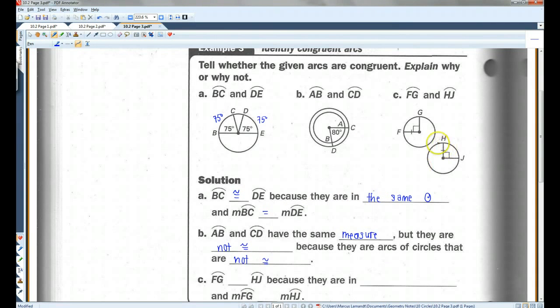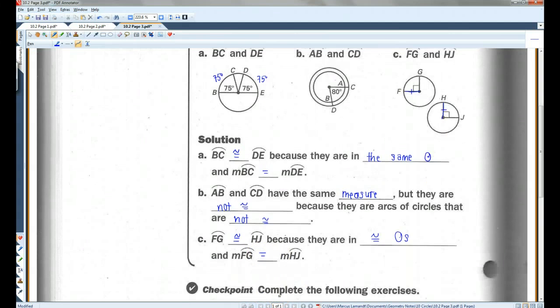Now, here, I want you guys to notice that this circle has a radius that is congruent to a radius in this circle. Hopefully, you guys remember, if you have two circles with the same radius, the circles are congruent. So, these arcs are congruent because they are in congruent circles. And, the measures of the arcs equal each other.